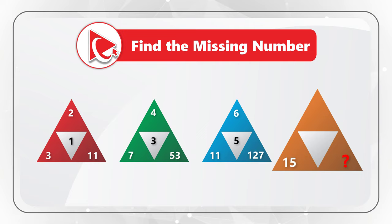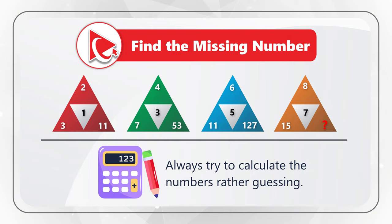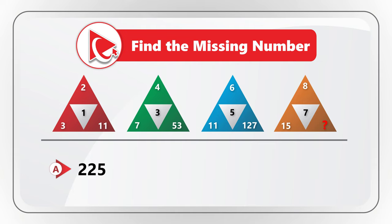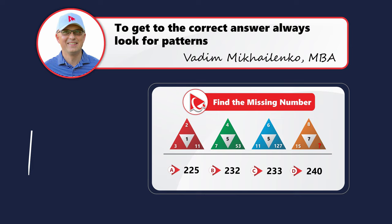Can you take a close look to see if you can come up with the answer? One tip is that you do not need to guess the number, but rather you need to calculate it. You need to select the calculated number out of four different choices: A 225, B 232, C 233, and D 240. I am moving forward to share with you my version of the solution. To solve this challenge, you need to find the pattern: if you add the middle number and the top number inside the small triangles, then put them into the bottom left corner of the triangle, and then square the bottom left corner number and add the top number.